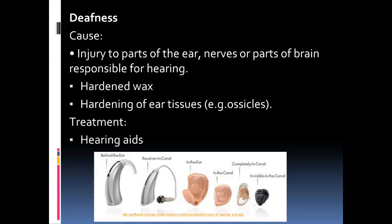Hearing aids can be used as a treatment. All hearing aids have the same basic structure: a small receiver, like a microphone, which receives the sound waves; an amplifier which increases the sound waves; and then a speaker which sends these sound waves at a higher volume into the ear, allowing a person to hear better. Some are found behind the ear and some are inserted within the ear.